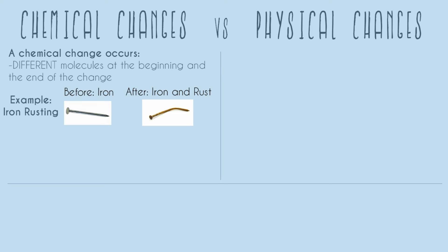And so that's the definition of a chemical change. We have different molecules at the beginning and the end. If you add or delete any molecules, that means that you've had a chemical change. We can also draw this chemical equation — we can write this out.